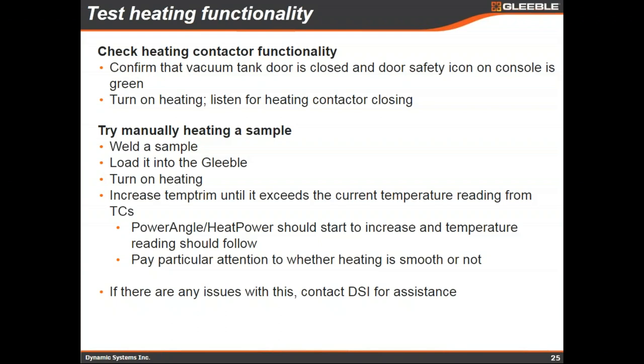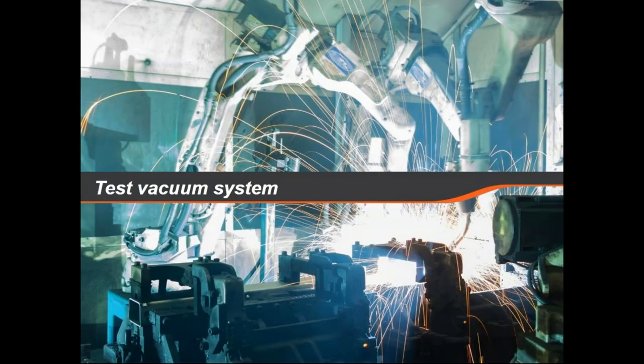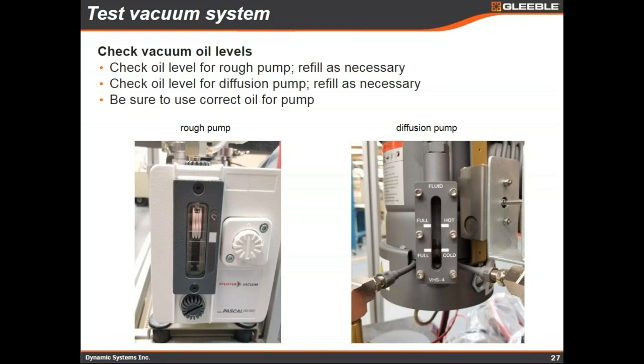If there are heating issues, contact DSI for assistance. Next is the vacuum system, which most users likely have. The first check would be the oil levels in the vacuum pumps. Depending on which components you have, you may have two rough pumps or one, and you may or may not have a diffusion pump. Take a quick look at your vacuum unit and see where the levels lie on any pumps attached to your system.